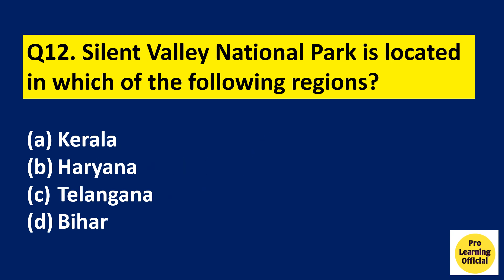Question number 12: Silent Valley National Park is located in which of the following regions? Option A: Kerala. Option B: Haryana. Option C: Telangana. Option D: Bihar. The right answer is Option A, Kerala. Silent Valley National Park is located in Kerala and is part of the Nilgiri Biosphere Reserve.